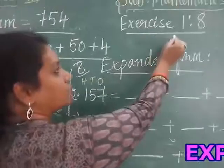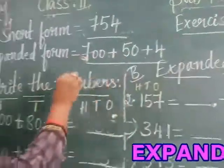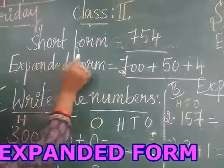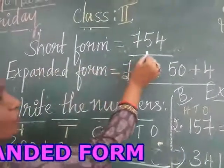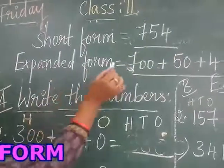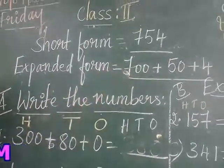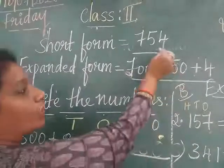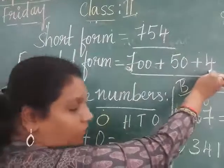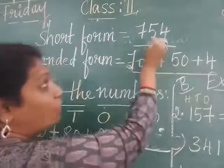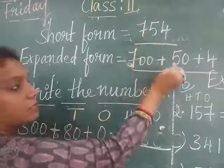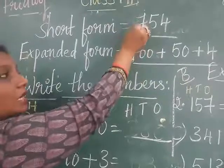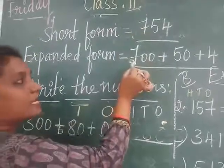Now we are going to exercise 1.8. In that, we are going to learn about short form and expanded form. Short form is 754 — what is expanded form? The same number, you are going to write its place also. 4 is in 1's place, you have to write 4. 5 is in 10's place, you are going to write 50. 7 is in 100's place — you are going to write 700.